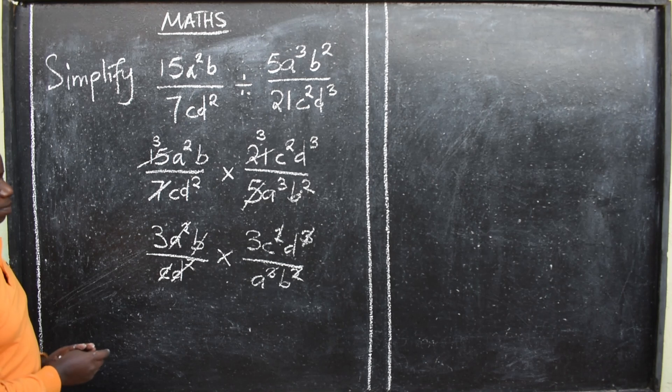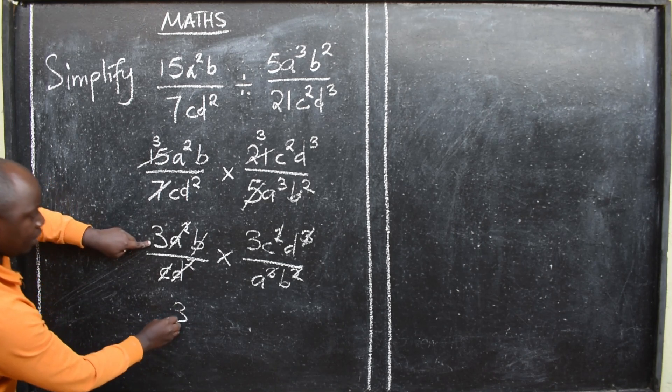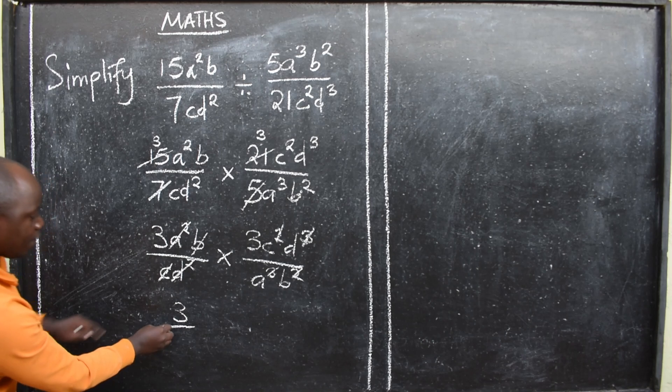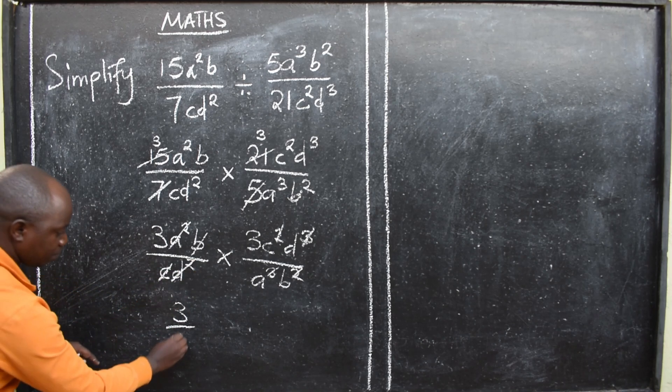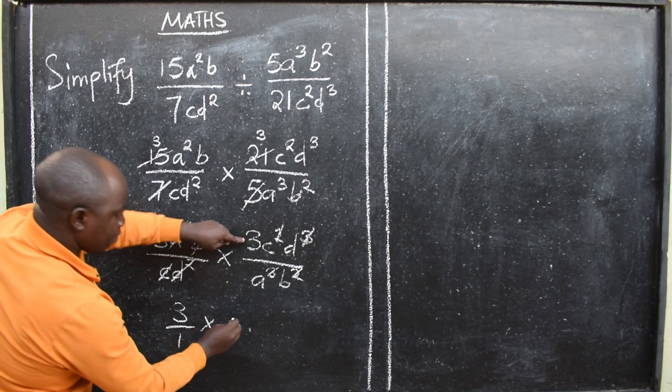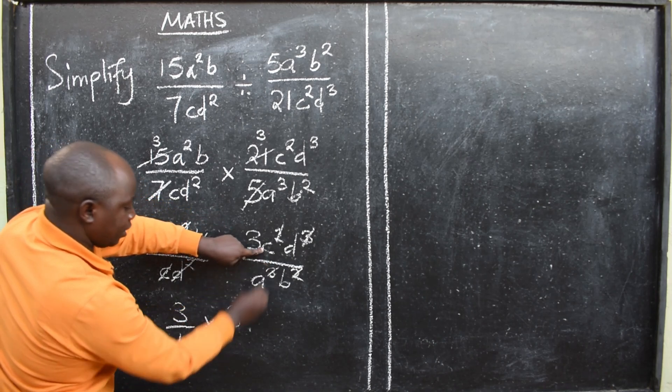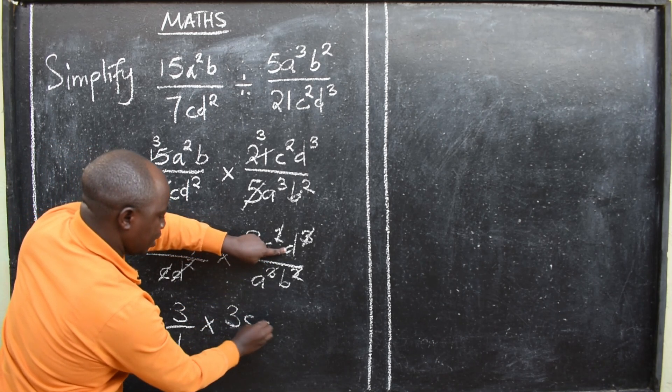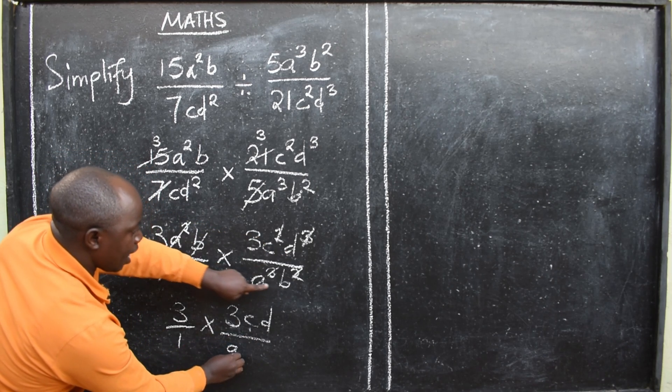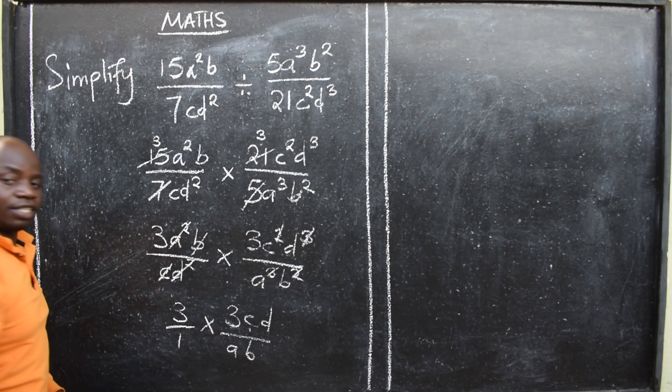Then I can write what has remained. 3. These I've canceled. Over. Here I've canceled. It means 1 times. Here I have 3. I have a c. I have a d. Over. Here I have an a. I have a b. Have you seen that?